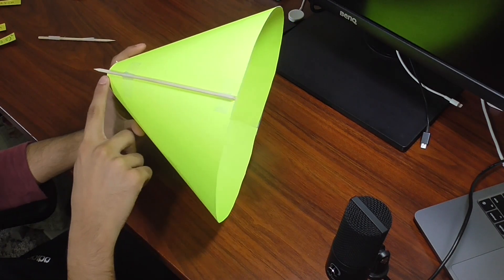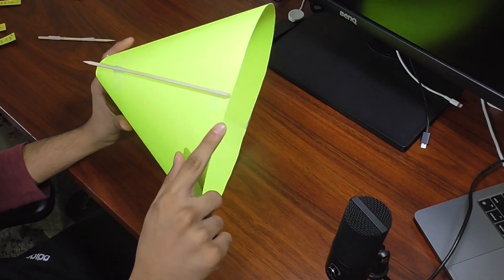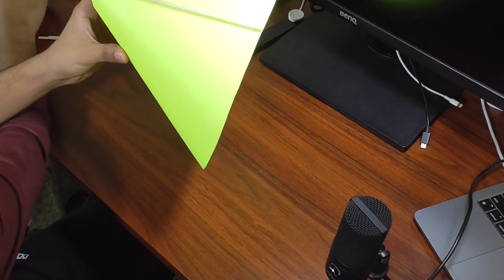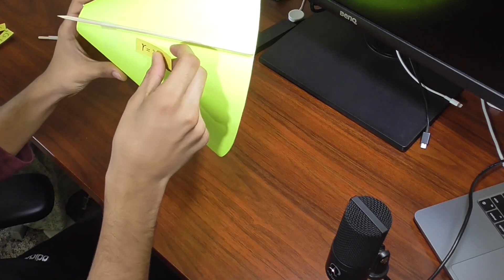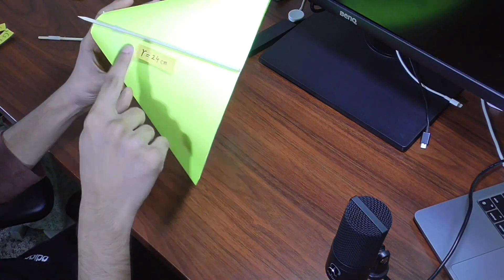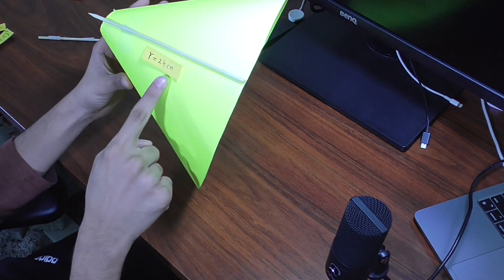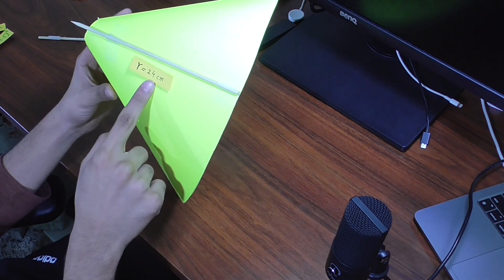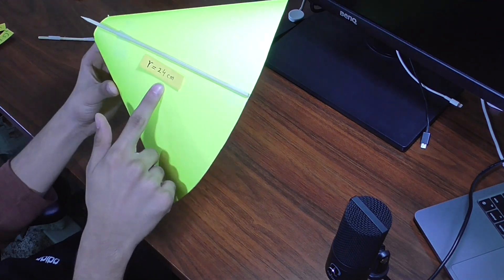The distance from the vortex of the cone to the base is 24 centimeters. If we square this length, it results in 576 square centimeters.